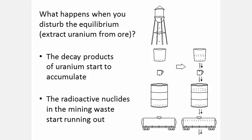Each drip out of each container represents an atomic decay that releases harmful radiation. The mining waste has a lot more dripping containers than the extracted uranium. So it's safer to live near a uranium storage shed than the waste dump of a uranium mine.